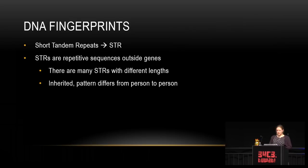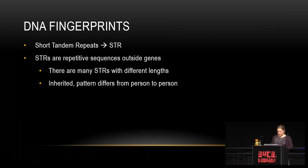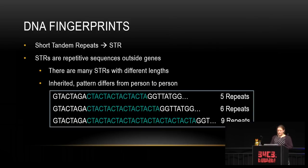Das wird oft als DNA-Fingerabdruck bezeichnet. Was das eigentlich bedeutet ist, dass man nach kurzen Tandem-Wiederholungen schaut, also STRs. Diese STRs sind sich wiederholende Sequenzen außerhalb von Genen – sie haben nichts damit zu tun, wie wir als Menschen aufgebaut sind. Es gibt viele STRs mit vielen verschiedenen Längen, die vererbt werden, und das Muster unterscheidet sich von Person zu Person.